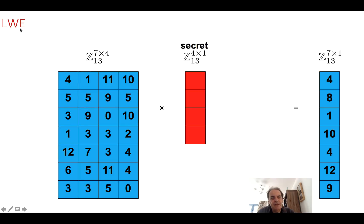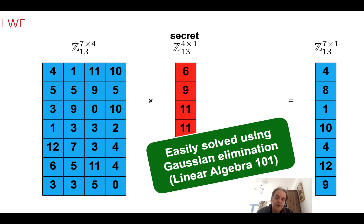The challenge in learning with errors is that if we have this matrix and we multiply it by secrets — this times that plus that times that plus that times that plus that times that equals the next row — we can ask: is it possible for us to find out what the four secret values are? Unfortunately, we can, and we use Gaussian elimination to take one matrix and another and divide by this matrix to get the secret value back again.